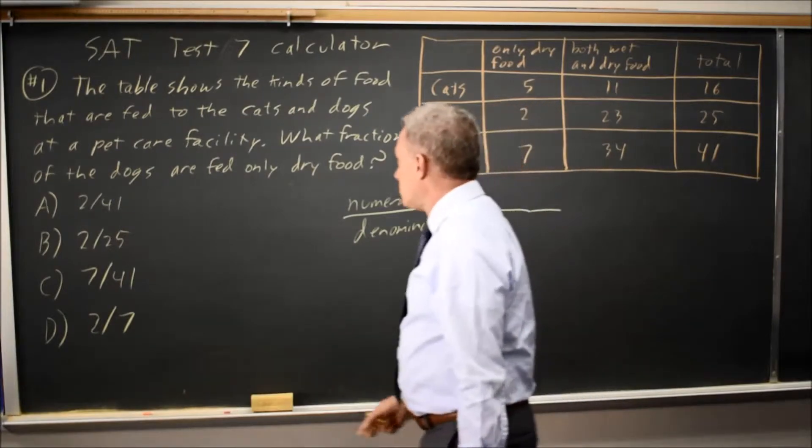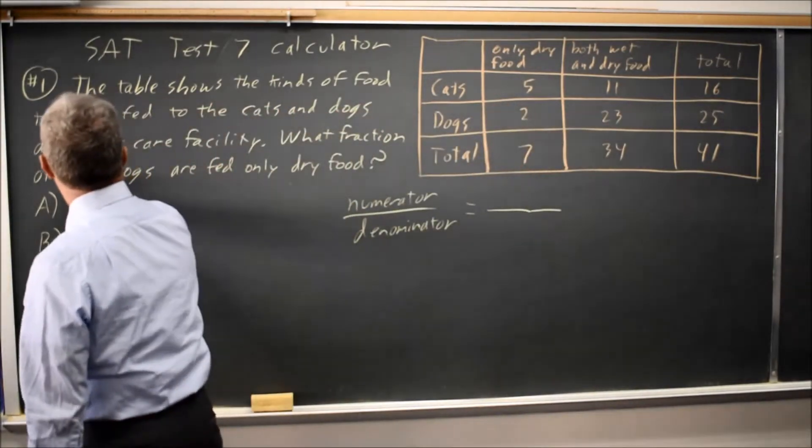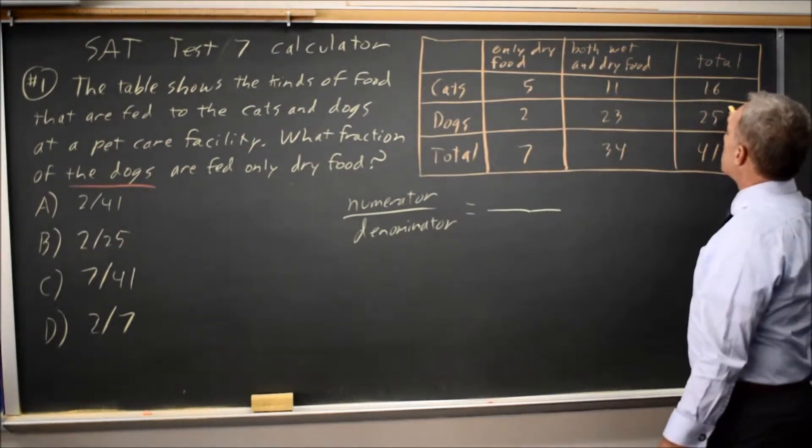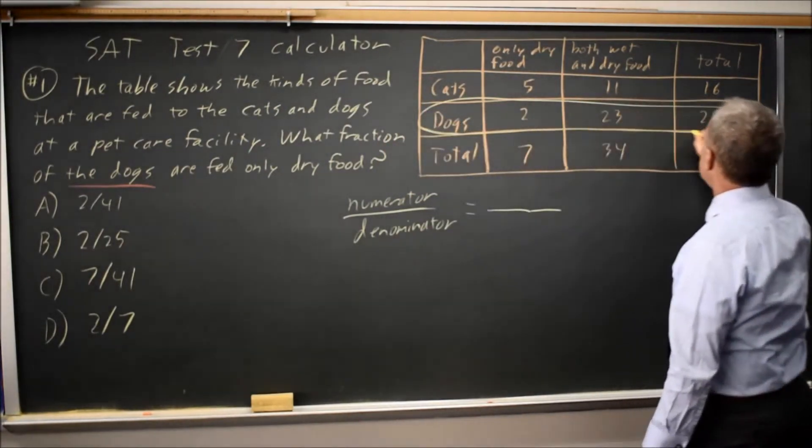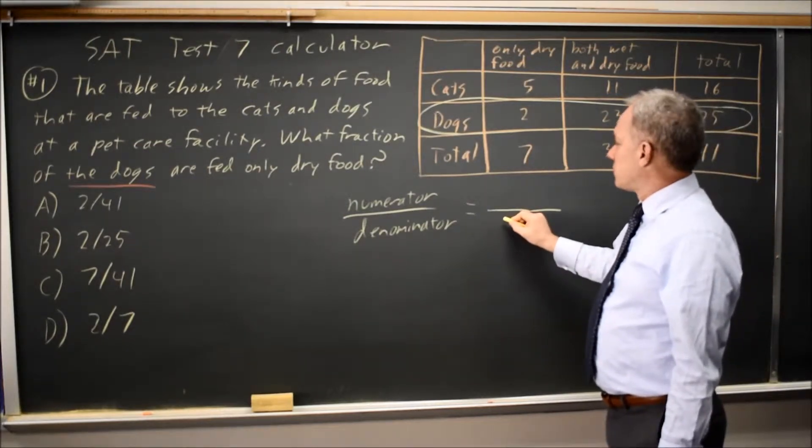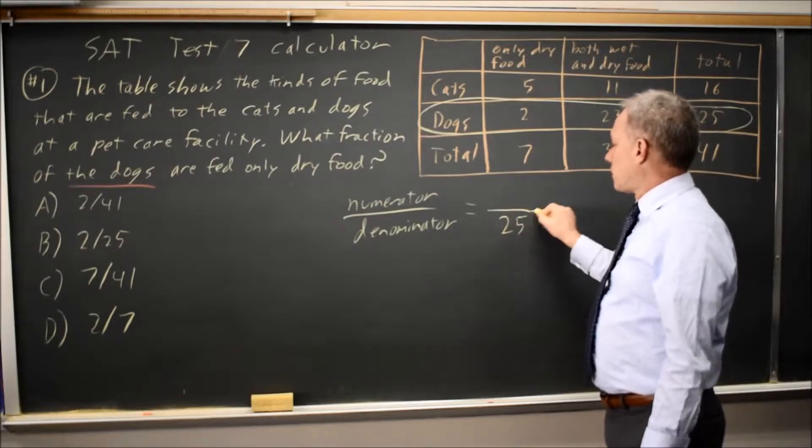And the question here was, what fraction of the dogs? So the dogs are the individuals that could be chosen, and the total number of dogs would be our denominator. There are 25 dogs, so there are 25 pets that could be chosen that are dogs.